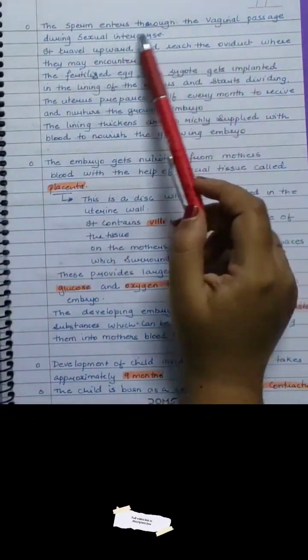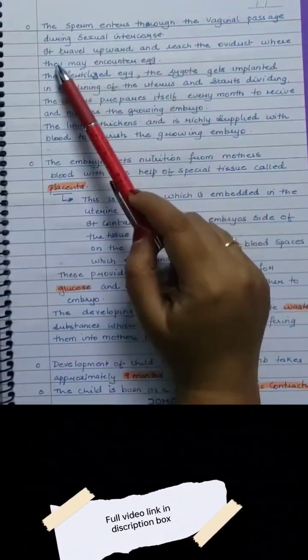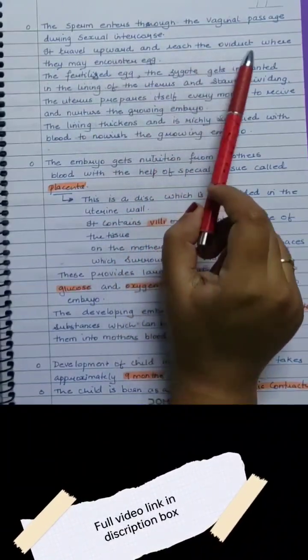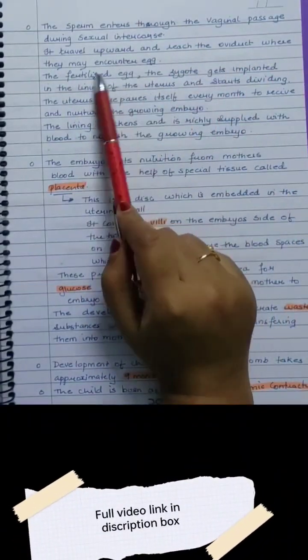The sperm enters through the vaginal passage during sexual intercourse. It travels upward and reaches the oviduct where it may encounter an egg.